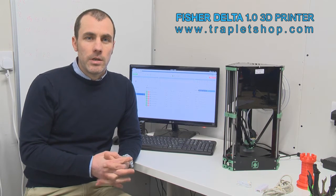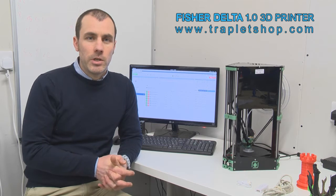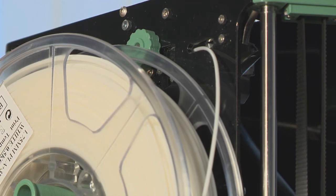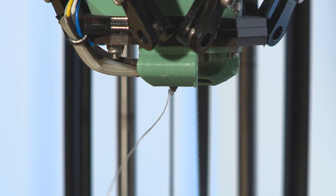The Fischer Delta is a fused filament fabrication machine, which means that it uses thermoplastic material provided as a filament into the machine and then extrudes it through a fine nozzle, which you see in the moving head on the machine.